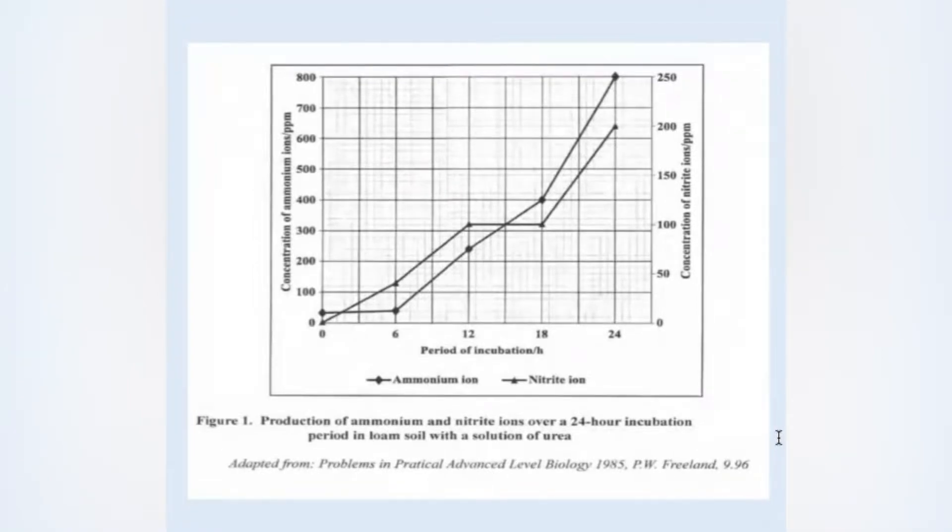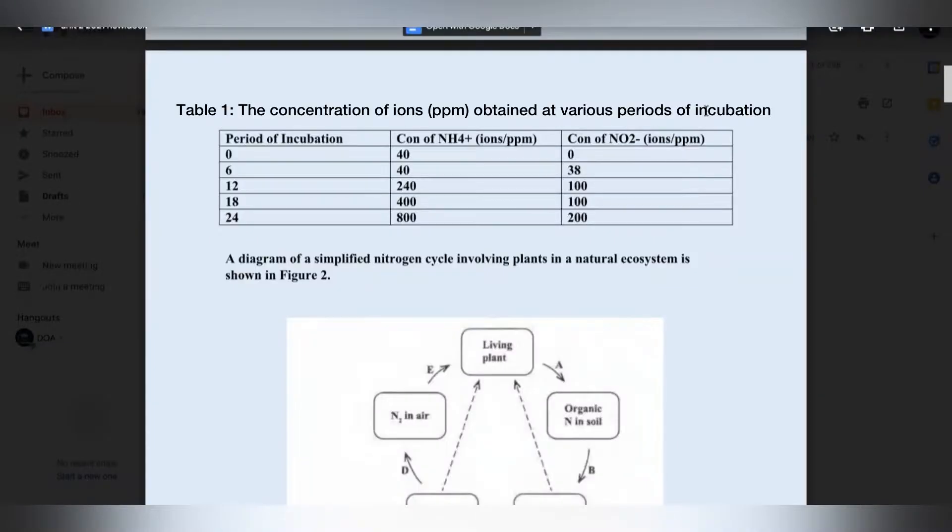Here is figure 1, production of ammonium and nitrate ions over a 24-hour incubation period in loam with a solution of urea. And the corresponding question asks to construct a table to represent the data given in the figure. So all you'd have to do is extract the data from the graph. Here is my table. And I want you to always remember to include a title. The title is 1 mark.